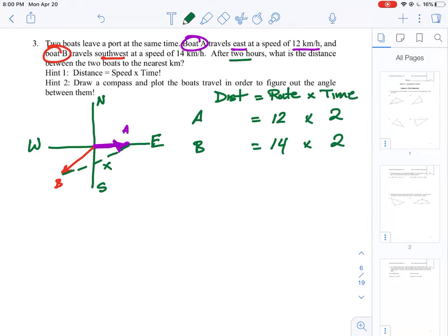Remember, we don't want to work on the rate by itself because the rate is speed. It doesn't tell you how far you've gone until you put in the time factor. Boat A in two hours will have gone 24 kilometers. Boat B will have gone 28.